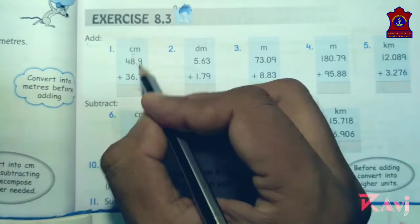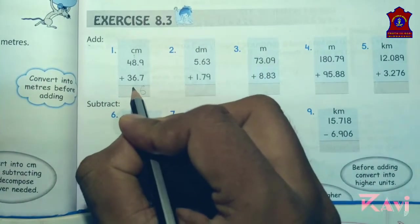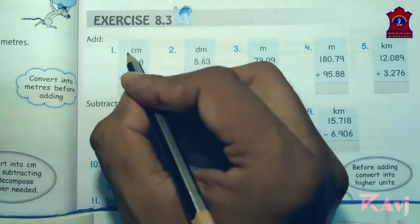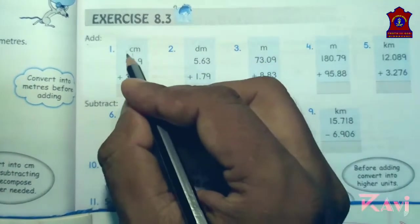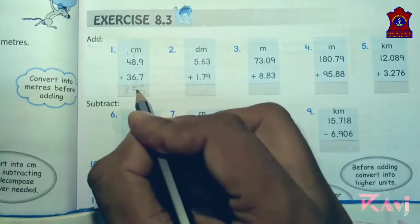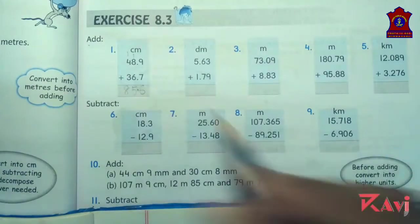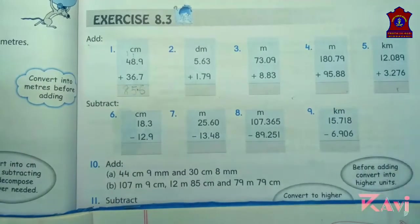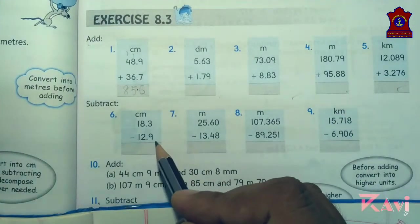1 goes here. 4, 1, 5 and 3 is 8. There was a decimal after one digit, put a decimal, so 85.6. Rest of all questions you will be doing in the book only.